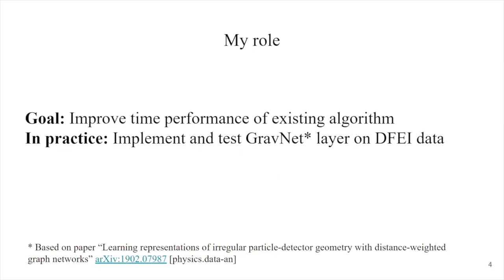My role in this project was to improve the speed performance of the existing algorithm. In practice, what it meant was there is a paper where researchers discovered new ways of convolution of graphs, and they claim that these ways are faster. So my role was to implement this new layer and to see if it performs on the same level, maybe better, maybe worse. If it performs on the same level and we take for granted that it performs faster, then we can implement it in our algorithm.